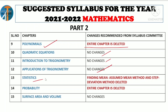Statistics lesson: here mean, median, mode, ogive graph — there is one important change. For finding mean, there are three methods: direct method, assumed mean method, and step deviation method. Only the direct method needs to be practiced. Assumed mean method and step deviation method — delete. Finding mean — practice only using direct method. Note this important change in Statistics.